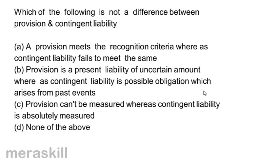Which of the following is not a difference between provision and contingent liability? A. A provision meets the recognition criteria whereas contingent liability fails to meet the same. B. Provision is a present liability of uncertain amount, whereas contingent liability is a possible obligation arising from past events. C. Provision can't be measured, whereas contingent liability is absolutely measured. Or D. None of the above.